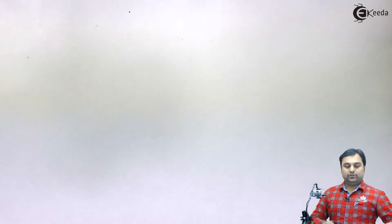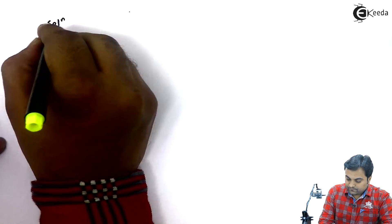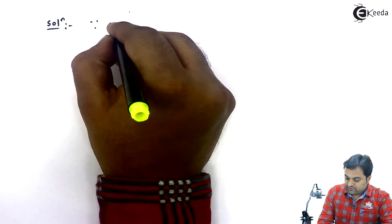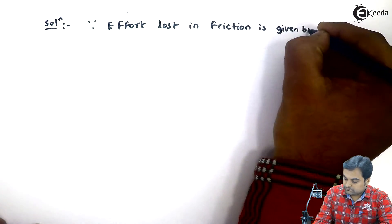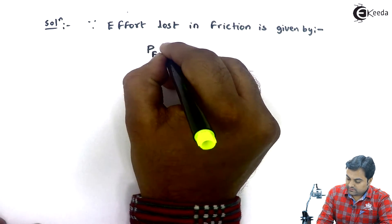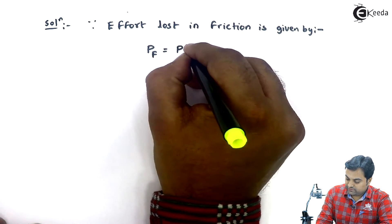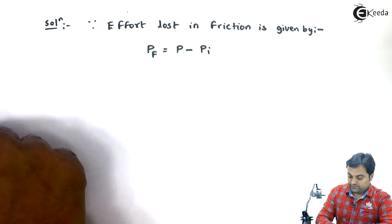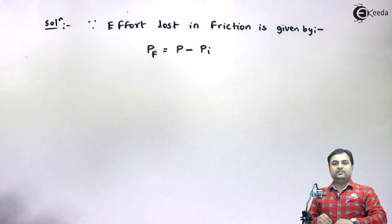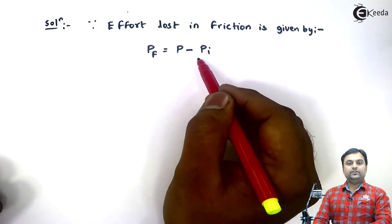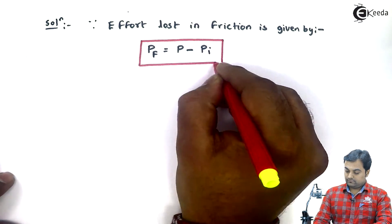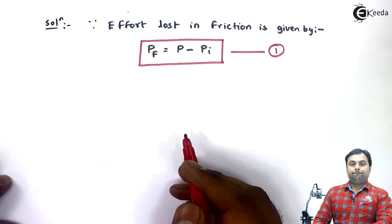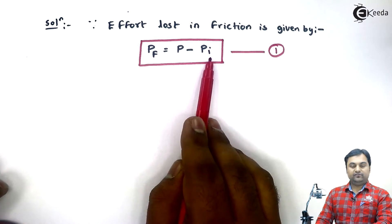Since the first question is effort lost in friction, I will start with that. Effort lost in friction is given by the formula: P_F = actual effort minus ideal effort. We know that actual effort is more and ideal effort is less, so the difference between the two gives us effort lost in friction. I'll keep this as equation number one.